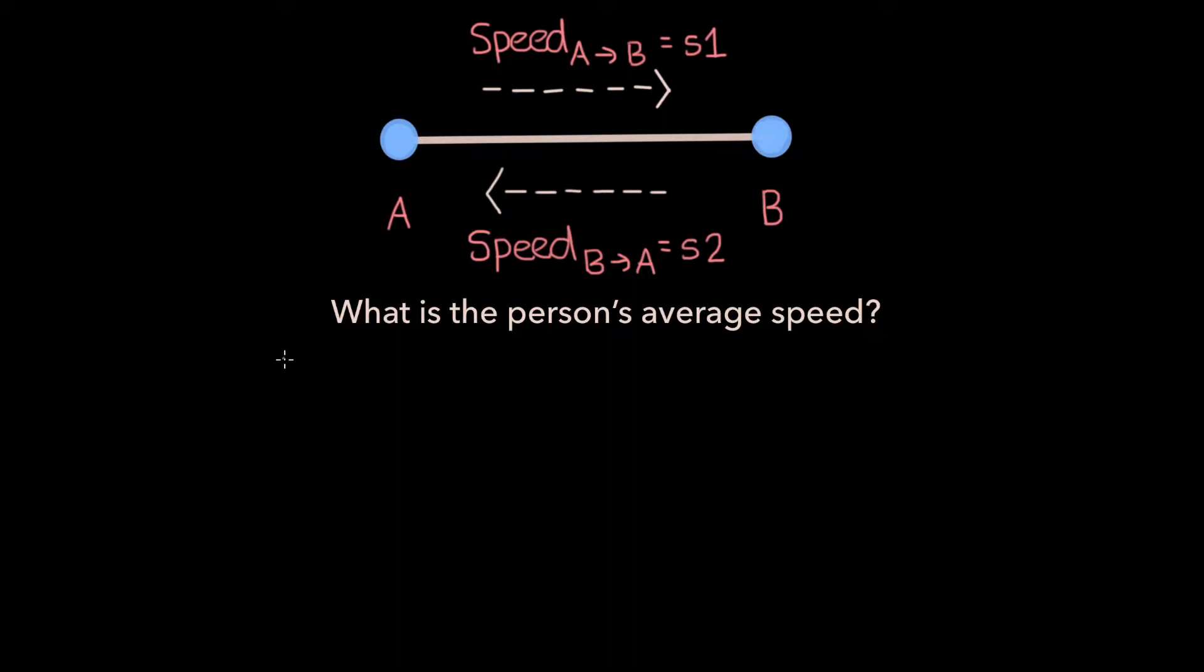Now a common misconception here is to say that the person's average speed is simply S1 plus S2 divided by 2, simply the average of the two speeds given in the problem. But this is actually incorrect and in this video I'll show you why.